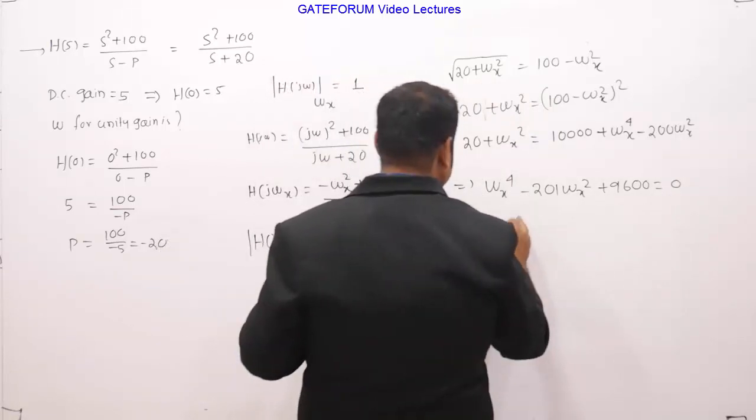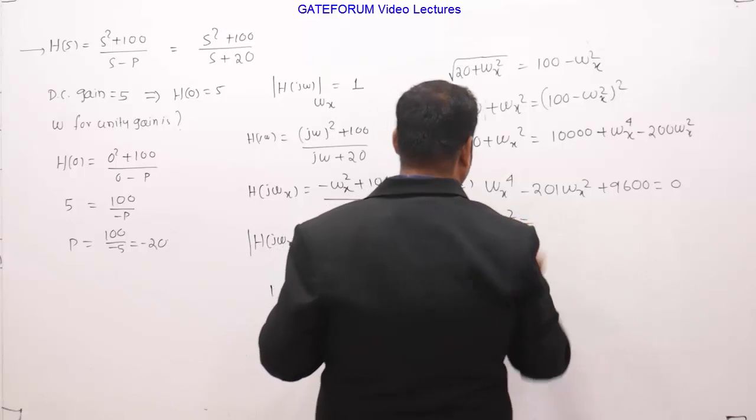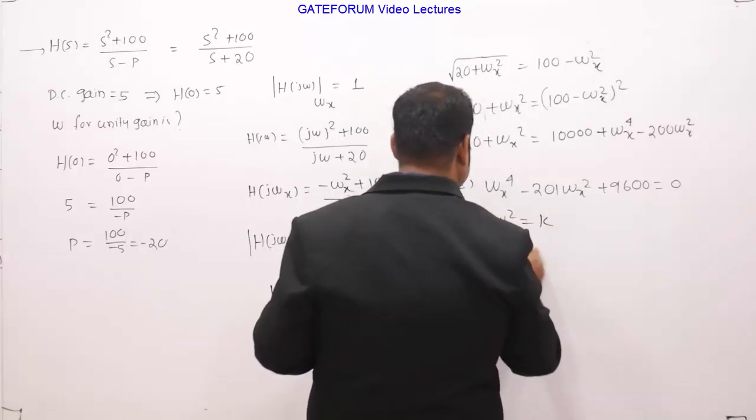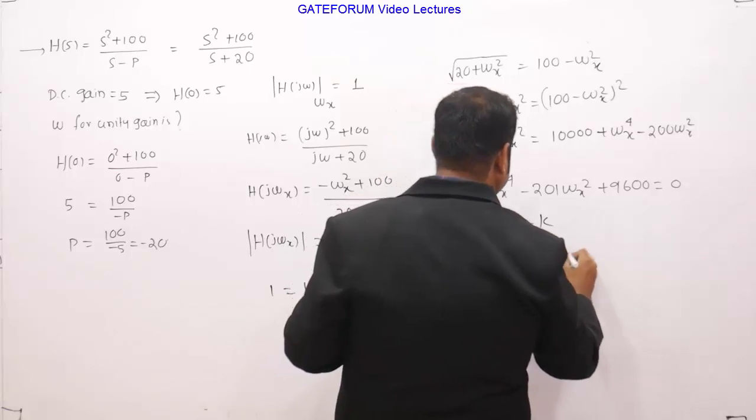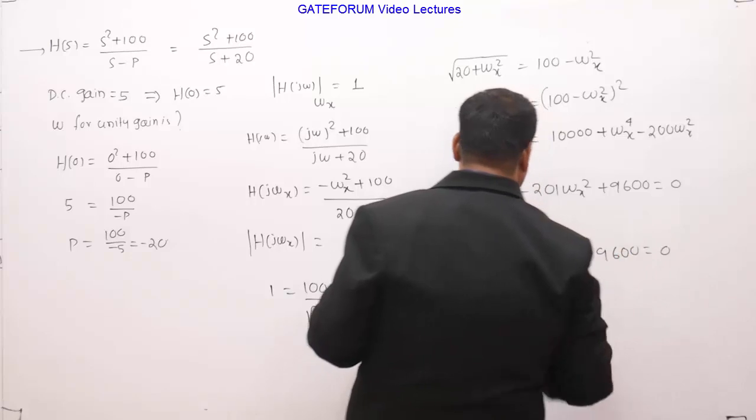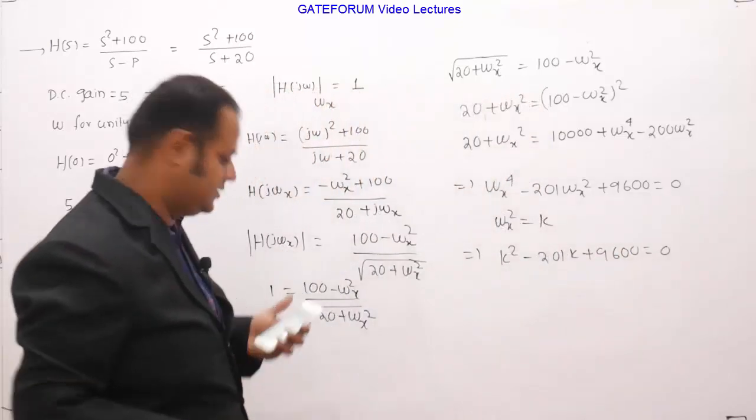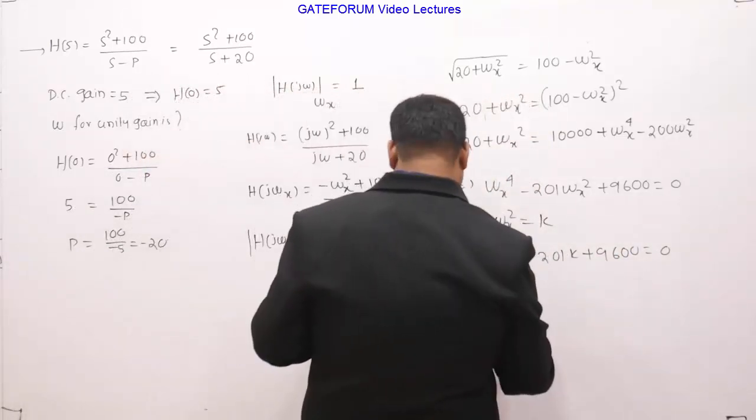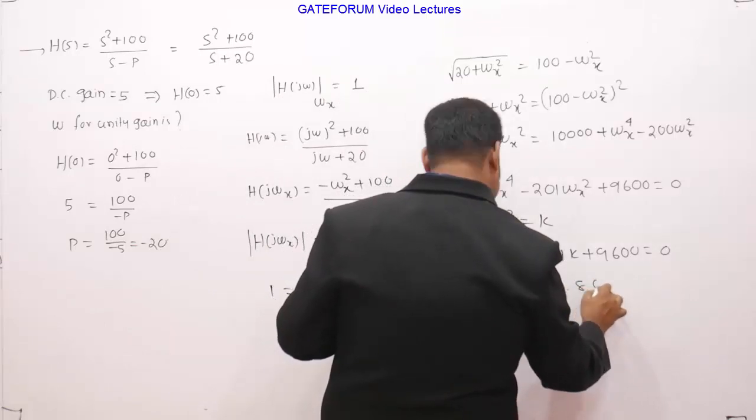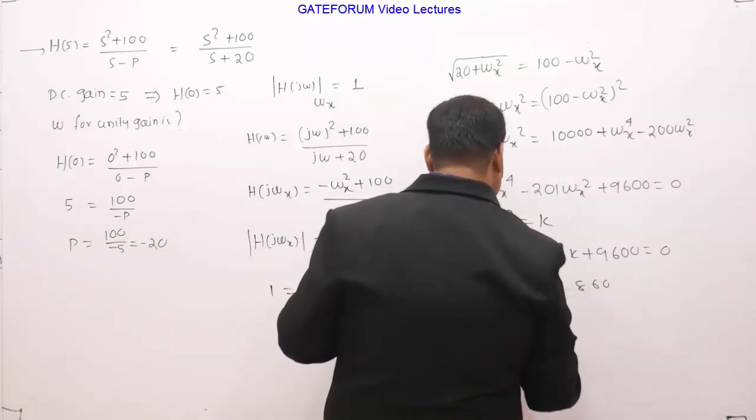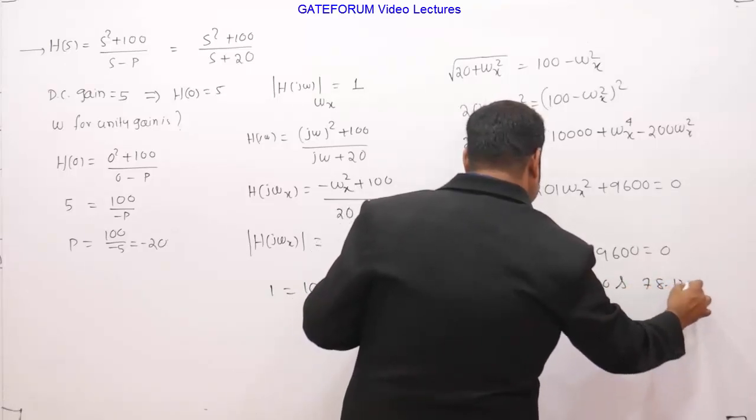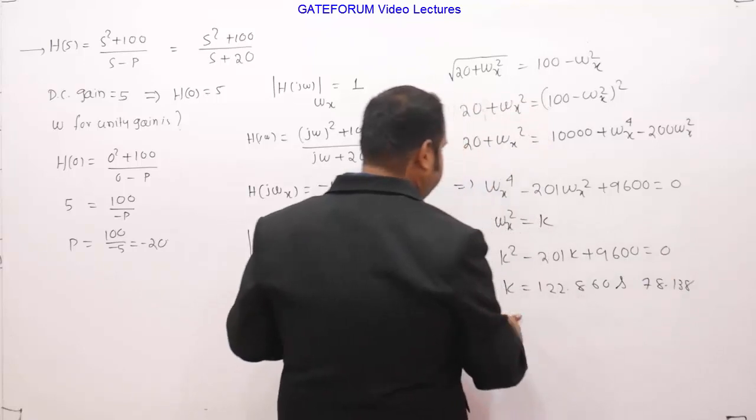If we let omega x square equals to let's say k, this means k square minus 201 k plus 9600 equal to 0. This is a quadratic equation and if you simplify this the value of k is 122.86 for one of the root and other root that we are getting is 78.138.